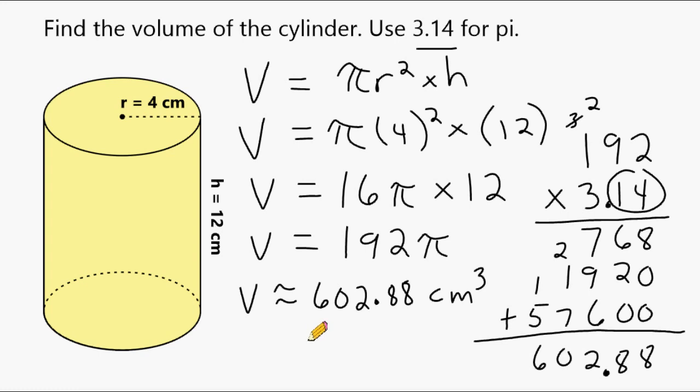All right, so finding the volume of a cylinder is actually pretty easy. It's really just finding the area of a circle and then multiplying the area of that circle by the cylinder's height, which will give you the volume of the cylinder.